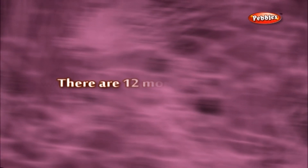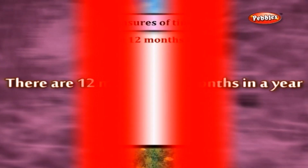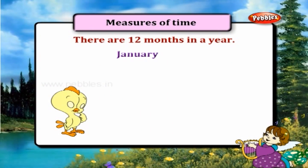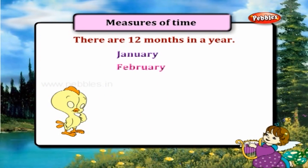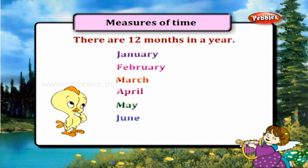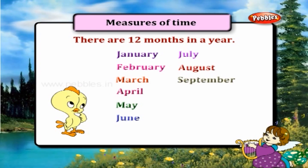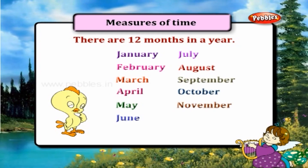There are 12 months in a year. They are January, February, March, April, May, June, July, August, September, October, November, and December.